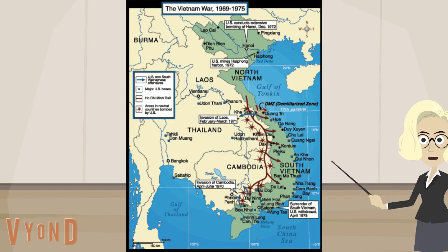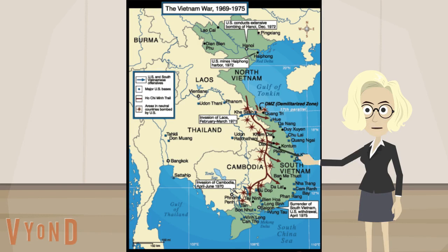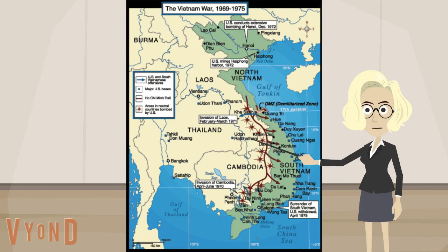Let's look at the key. This map shows the locations of U.S. Army bases and some of the areas the United States bombed. When I look carefully at the map, I see that the major U.S. bases were all located in South Vietnam, and that the U.S. teamed up with South Vietnam on some major offenses. To me, it's pretty clear that the U.S. supported South Vietnam.